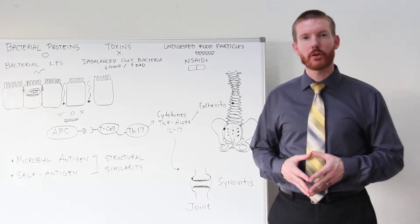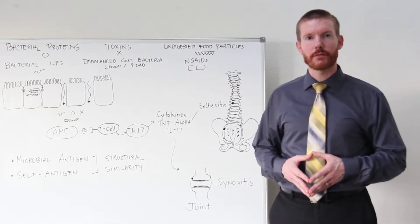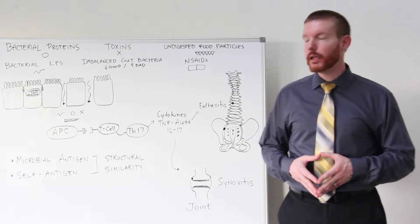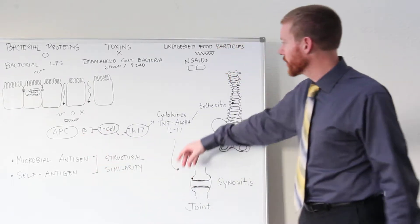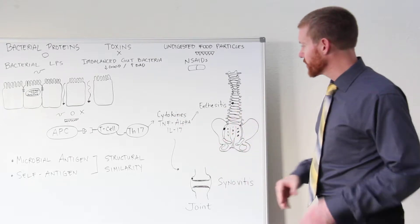It's also important to understand why bacterial proteins, toxins, and undigested food particles in the gut interact with the gut immune system that causes the chronic inflammation that attacks the joints.